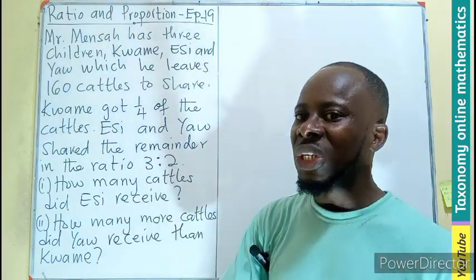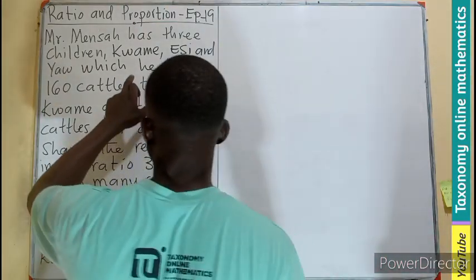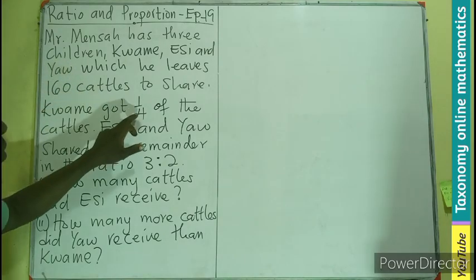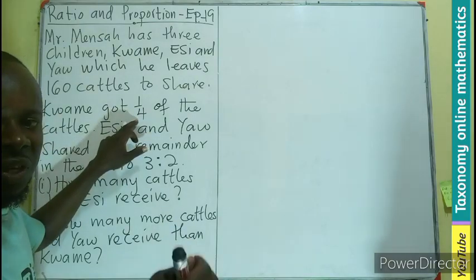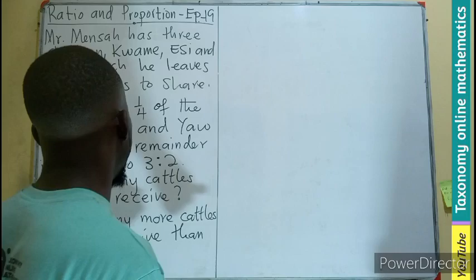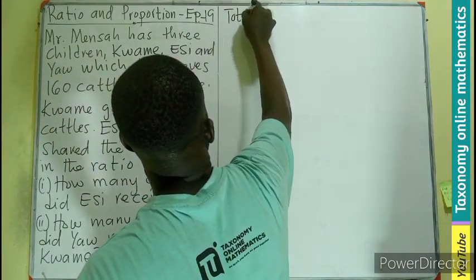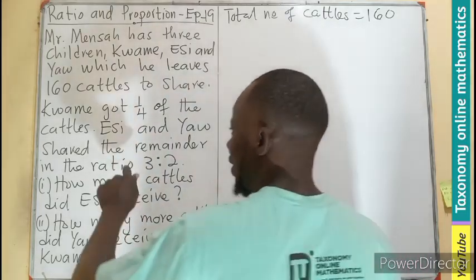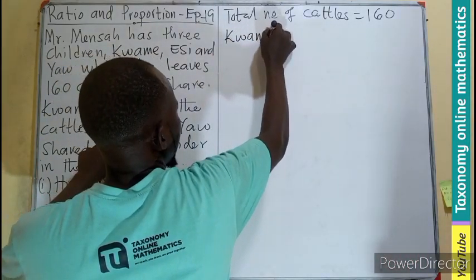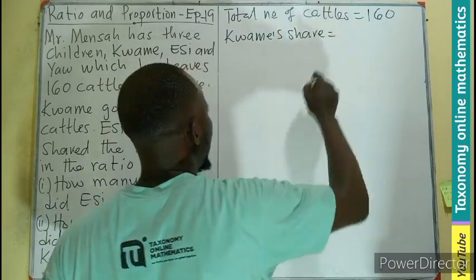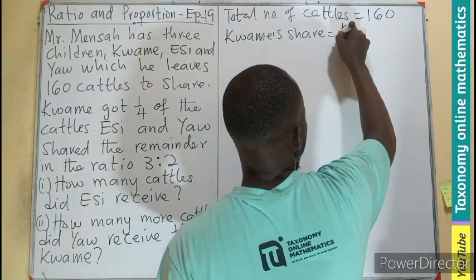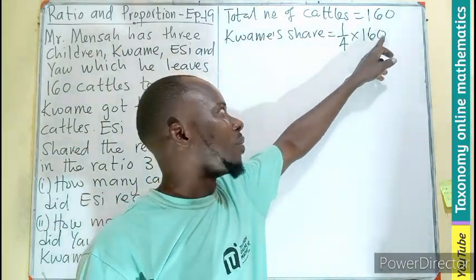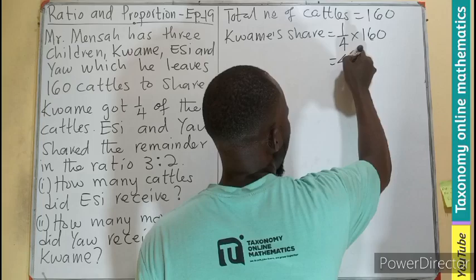We are identifying the shares for Kwami, Ac, and Yam. Kwami's share is not in the ratio but is a fraction of the total, so we start with Kwami's share. The total number of cattle is 160. Kwami is going to take one-fourth of 160, and since 4 goes into 16 four times, multiplied by 10 gives 40 — meaning Kwami receives 40 cattle.